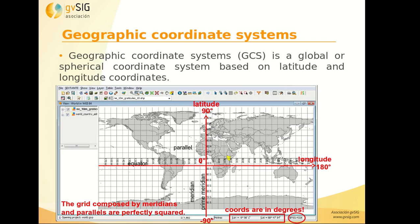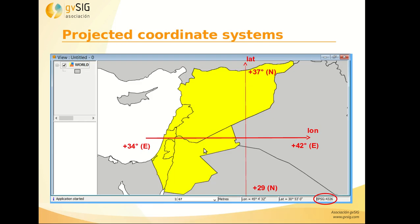Here we can see how the global coordinate system works. We have latitude and longitude: the parallels run north or south from the equator, and the longitude runs east or west from the Greenwich meridian. Here we can see a local area — these countries have a longitude east from 34 to 42 degrees and latitude north from 29 to 37 degrees.